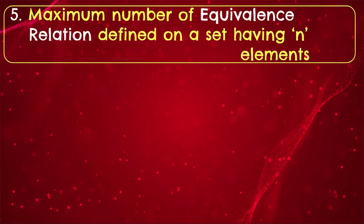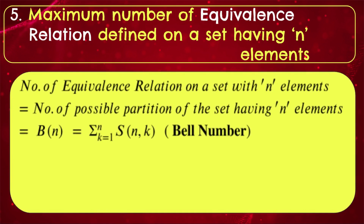Next, what is the maximum number of equivalence relations defined on a set having N elements? We know the total number of relations defined on a set with N elements is 2 raised to N×N. To find how many of them are equivalence relations: if a relation is an equivalence relation, then the given set can be expressed as a partition. Whatever equivalence relation exists, there is a corresponding set partition. So the number of equivalence relations on a set with N elements equals the number of possible partitions of that set.